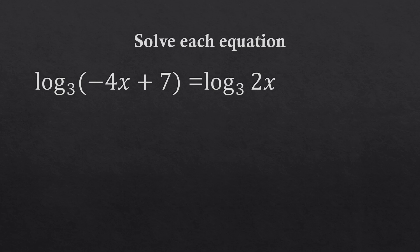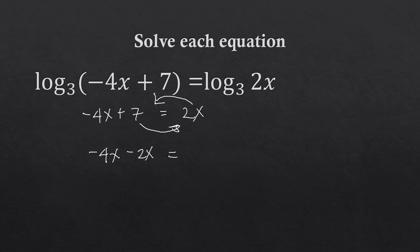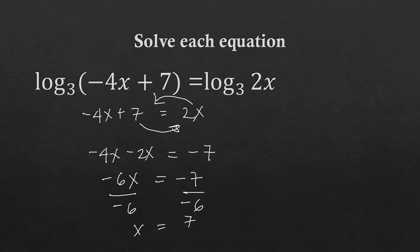Next, we again have a single logarithm on each side with the same base, so we equate the arguments: negative 4x plus 7 equals 2x. Moving 2x to the left gives negative 4x minus 2x, which is negative 6x, and moving 7 to the right gives negative 7. So negative 6x equals negative 7. Dividing by negative 6, x equals 7 over 6.